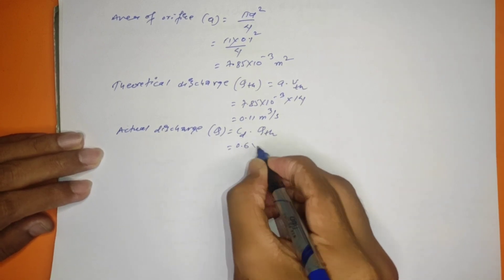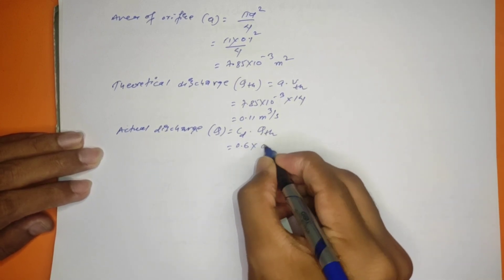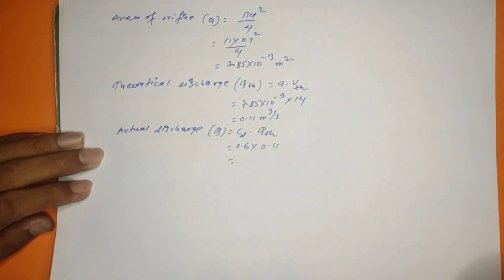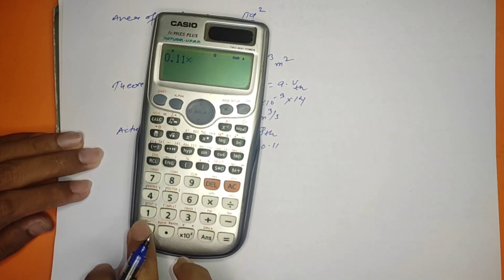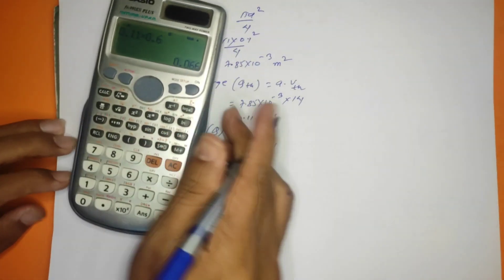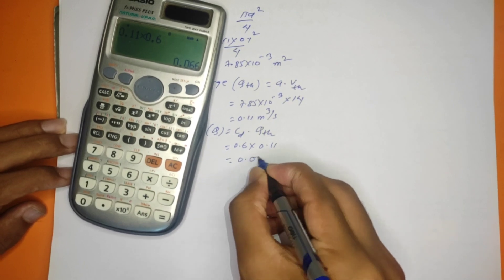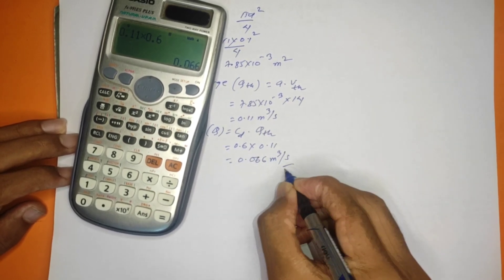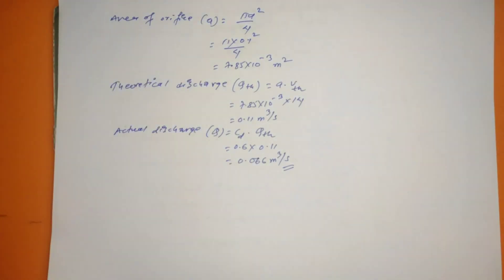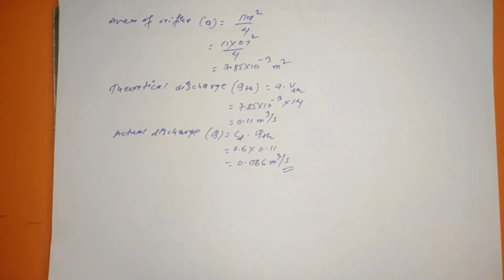The actual discharge = Cd × theoretical discharge = 0.6 × 0.11 = 0.066 m³/s. This is the actual discharge through the 20 cm pipe with the orifice meter.